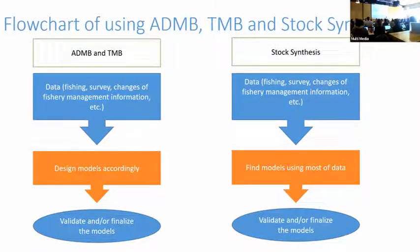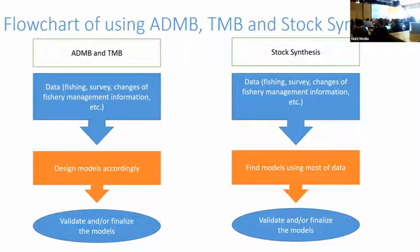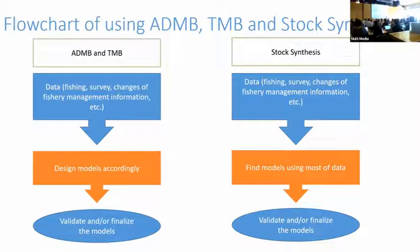Here's the stock assessment process as a fresh user. Using AD&B and TMB, you start with data, think about what type of data and information you have, then grab a textbook to find mathematical equations and write the code. For Stock Synthesis, you read the paper — it's very general and complicated. Then you decide whether you can use your data or not, and start matching your dataset to what it can handle. That's the key difference from my experience.